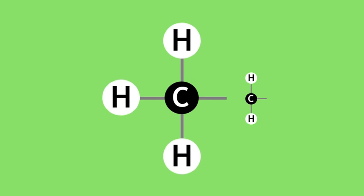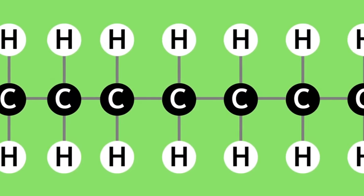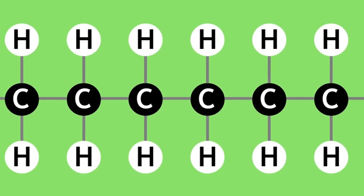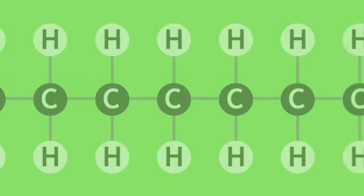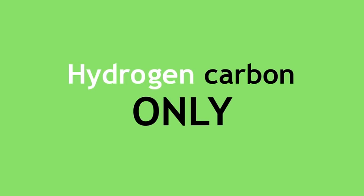There are many millions of organic compounds that you can make using hydrogen and carbon and arranging them in different ways. Hydrocarbons are defined as compounds made of hydrogen and carbon only.